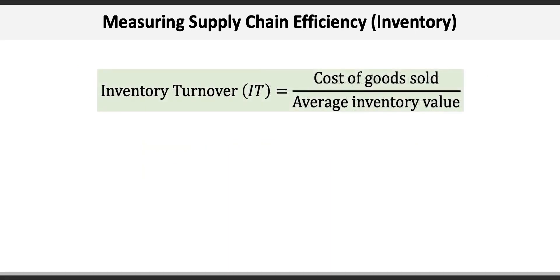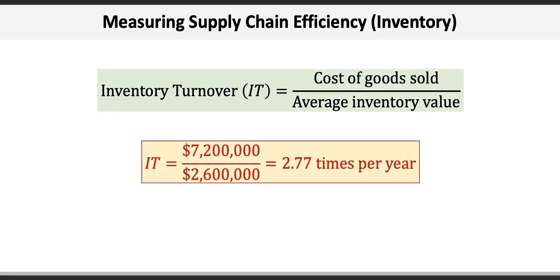Now even though we weren't asked, it's always good practice to calculate inventory turnover. Inventory turnover, IT, equals cost of goods sold divided by average inventory value. The cost of goods sold is 7,200,000 divided by average inventory of 2,600,000, which equals 2.77 times turn, or roughly 132 days.